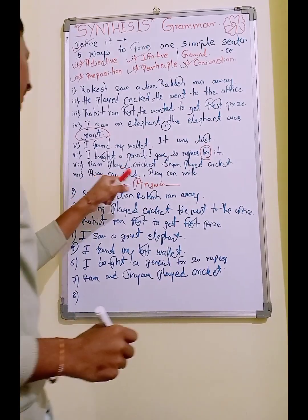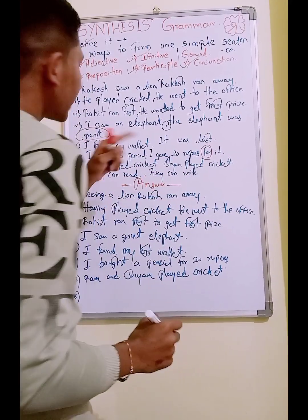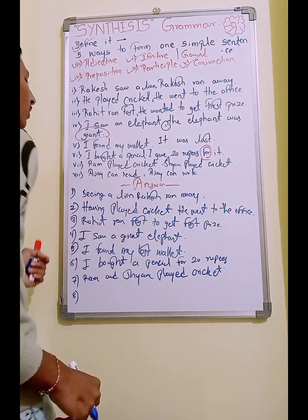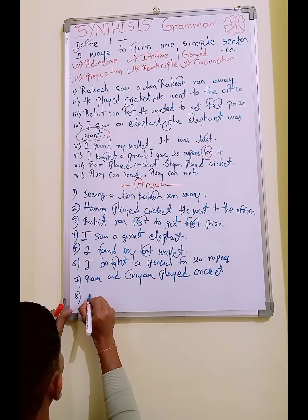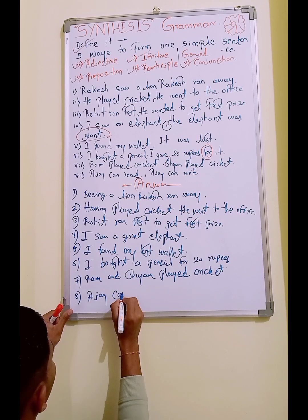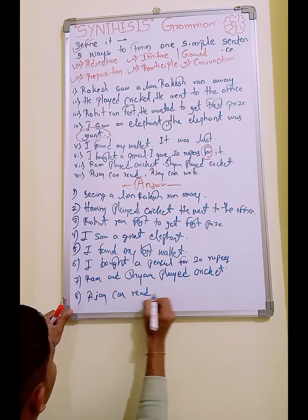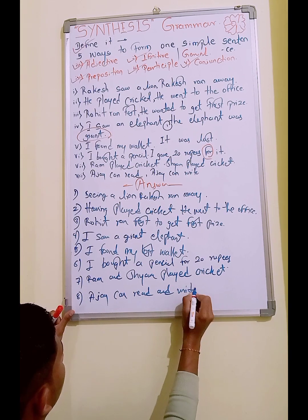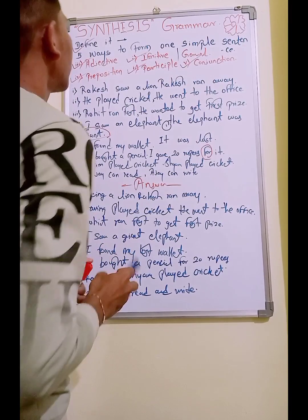Another example with conjunction: 'Ajay can read. Ajay can write.' The answer is: 'Ajay can read and write.' The conjunction 'and' replaces the whole second sentence.